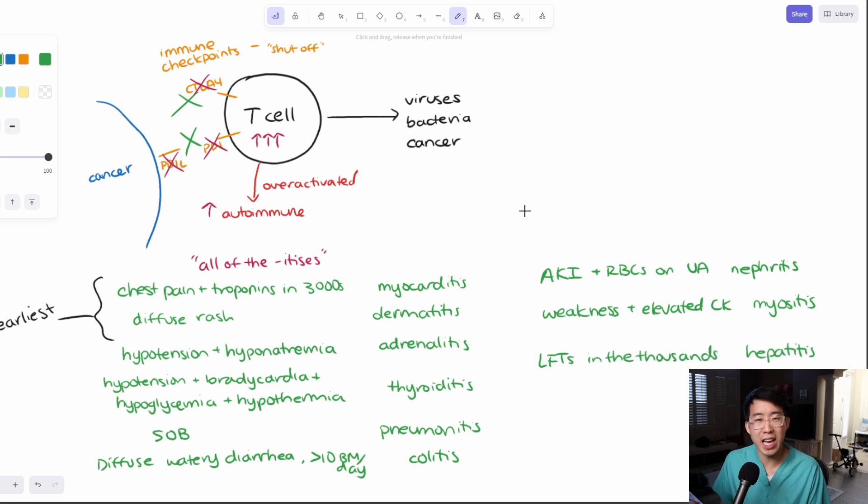So again, pick basically any organ that you want. Activating or over activating our immune system can essentially cause it to attack it. And that can lead to an itis of that organ. Oh yeah. And also another very morbid one is altered mental status. You can even get cerebritis. So all of these things are what they call irAEs or immune related adverse events.